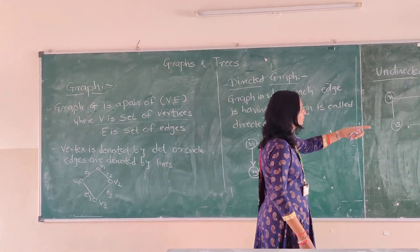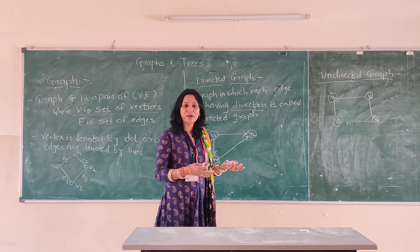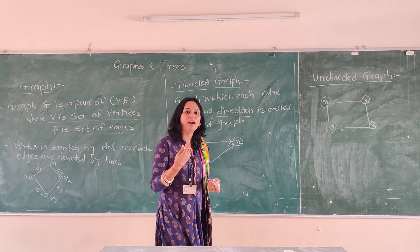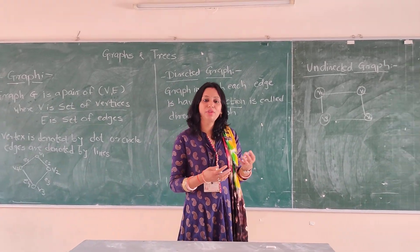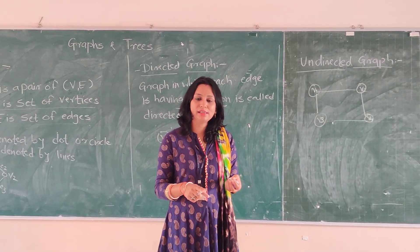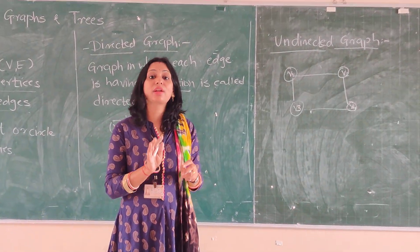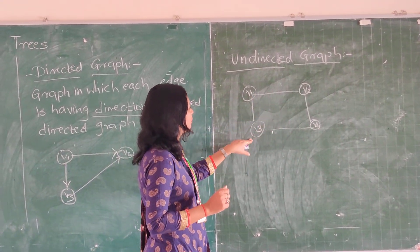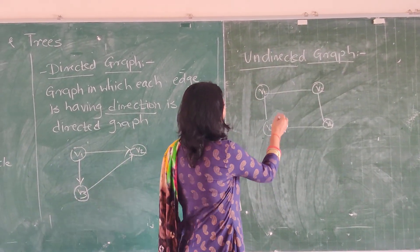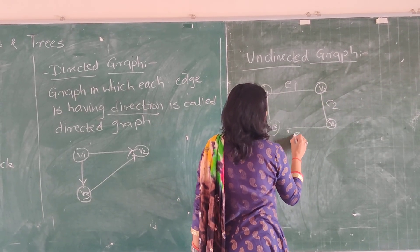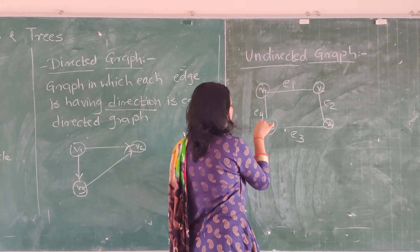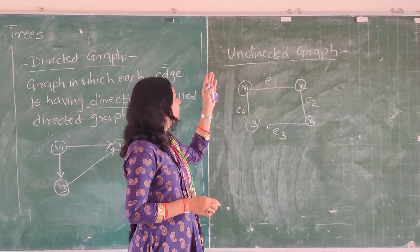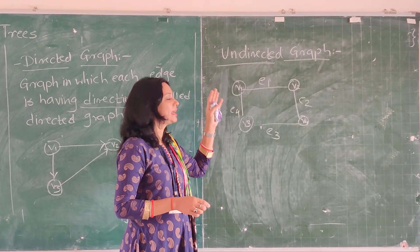Now, if a directed graph has edges with directions, then an undirected graph is the graph which contains edges and vertices but the edges do not have any particular direction. Like V1, V2, V3, V4 — all of them are connected with edges, but none of them have any particular direction, so they are called an undirected graph.